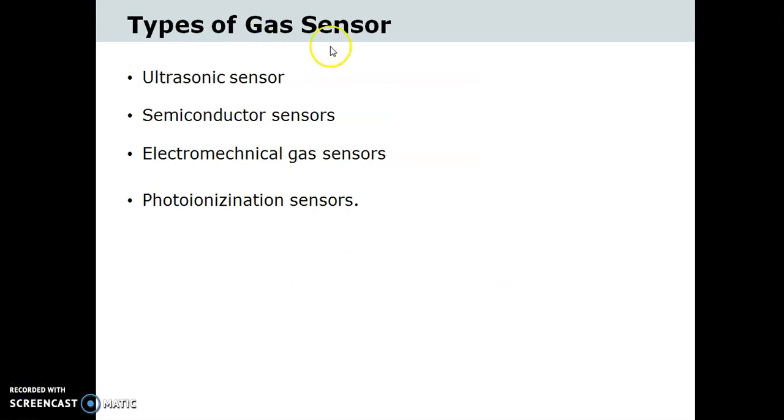The types of gas sensors commonly used are ultrasonic sensor, semiconductor sensor, electrochemical gas sensor, and photo ionization sensor. In this video we will learn semiconductor sensor in detail.